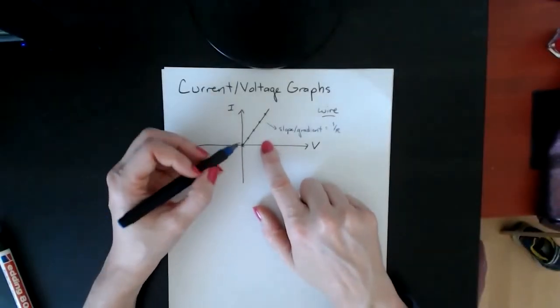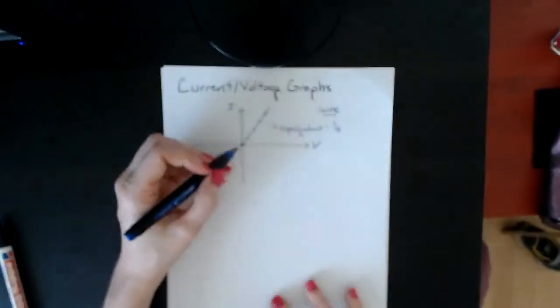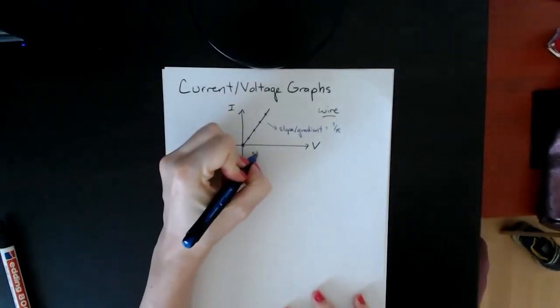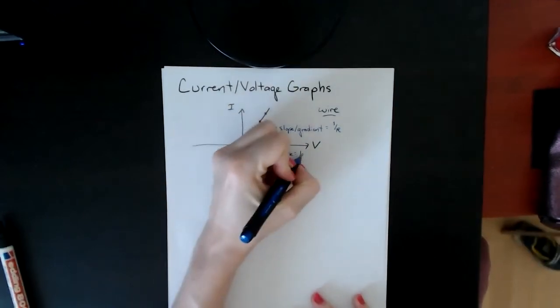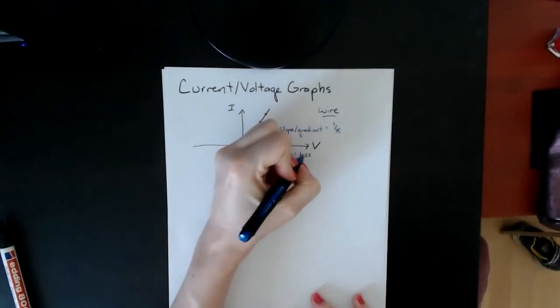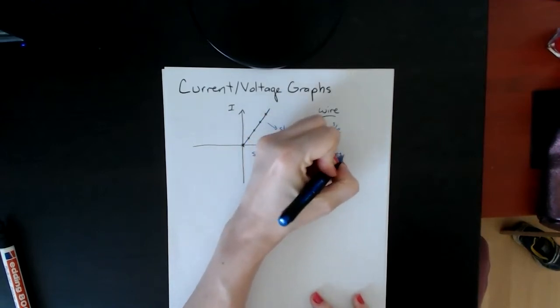Since this is the traditional way, this is what I've drawn. The slope and gradient is one over the resistance, which means that the steeper the slope, the less resistance or lower resistance you have within the system—in this case, within the wire.